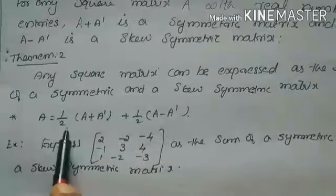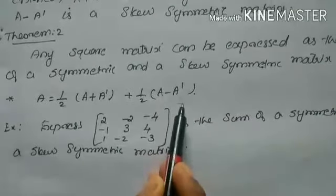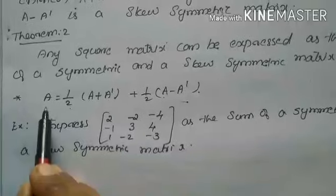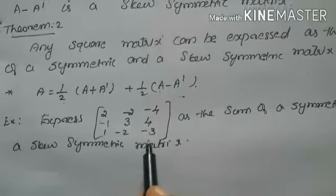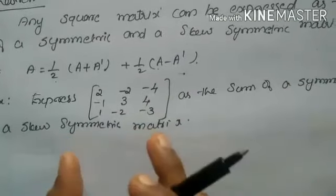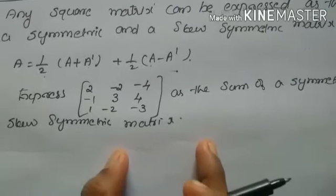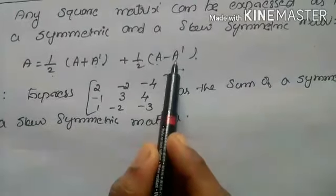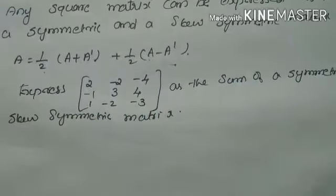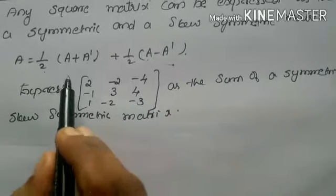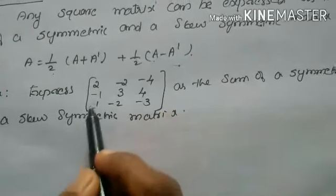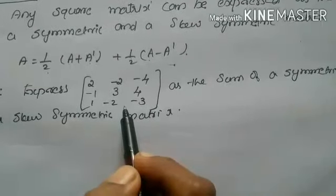If you multiply by a scalar, the symmetric and skew-symmetric properties are preserved. Note that A dash and minus A dash cancel, and the two halves give A itself. So for this type of question, first find A plus A dash, multiply by half — that is the symmetric matrix (equation 1). Then find A minus A dash and multiply by half — that is the skew-symmetric matrix. Adding both parts gives the original matrix.